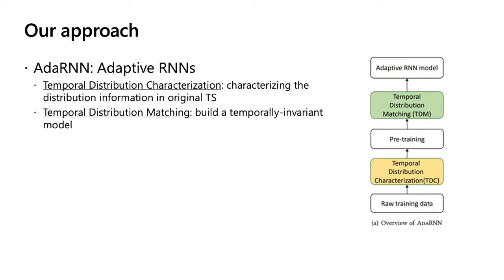We can have the raw training data. We can use temporal distribution characterization to characterize the distribution information to get the worst-case distribution scenario of the different segments. After that, we can use some pre-training techniques. After that, we can use the temporal distribution matching scheme to learn our adaptive RNN model.